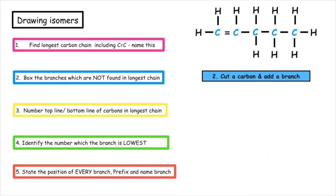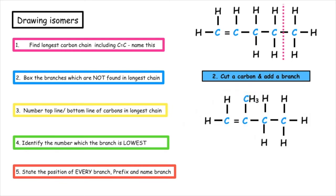Once you've moved the position of the carbon-to-carbon double bond along the longest chain, what you want to do is take one of your straight-chained alkenes and cut a carbon and add a branch onto a middle carbon. The longest carbon chain that I have going through my carbon-to-carbon double bond is four. I'm going to number them on the top line and the bottom line, and put a box around the branch which is not found in the longest carbon chain. The lowest position that the carbon-to-carbon double bond can be in is position one, so the name of the alkene this time would be but-1-ene.